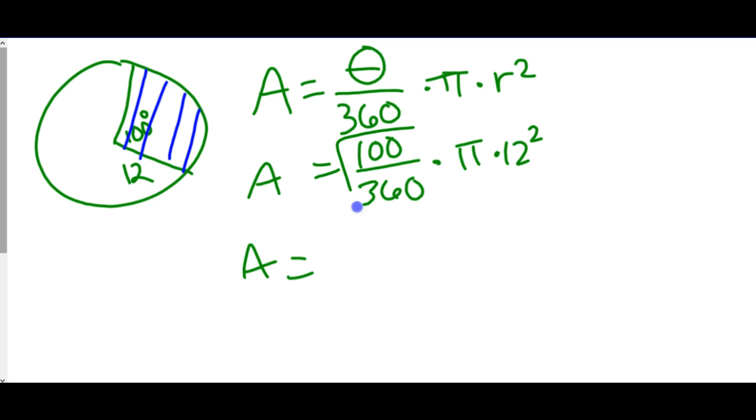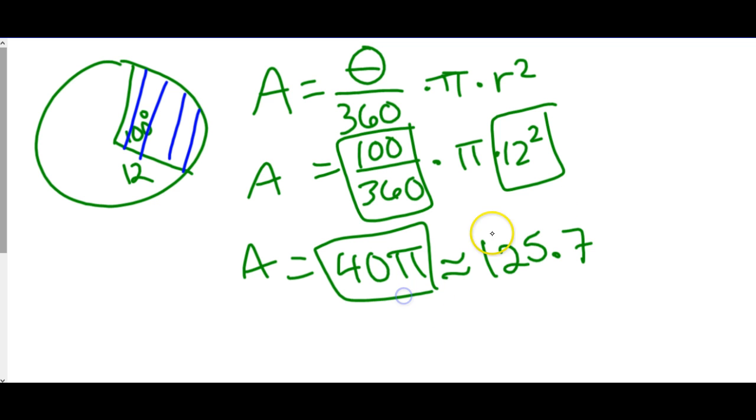If we just want to leave it in terms of pi, we're going to do everything except work with pi. We're going to do the 100 divided by 360 and times it by 12 squared. Multiplying that all together, we get 40 pi. That would be leaving our answer in terms of pi. If we approximate it and get a decimal answer, we would do 40 times pi, which is 125.7. So there are two ways to write your answer.